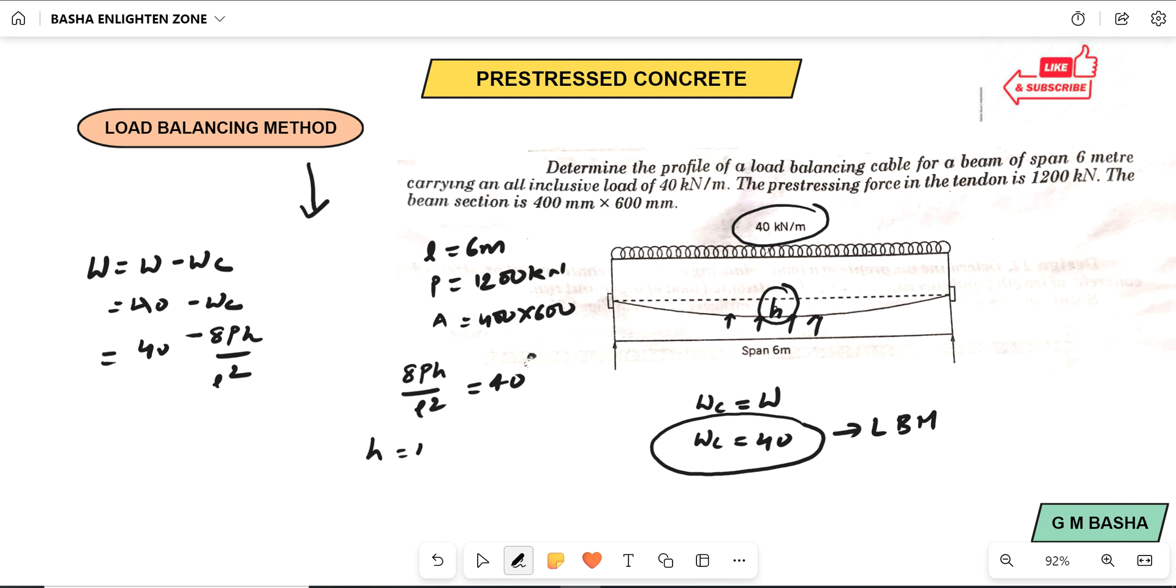Each and every value will be there. H will be equal to 40 L square by 8P. Again, simplify this one. 40 into length of the span will be given 6 meters, which is 6 square by 8 into P value will be taken.